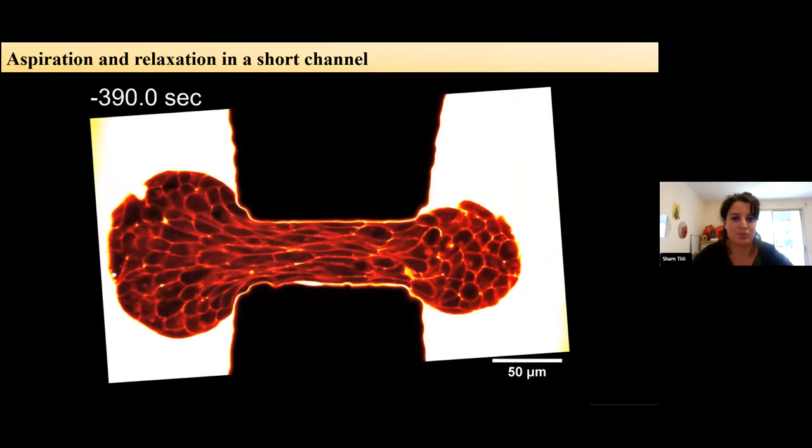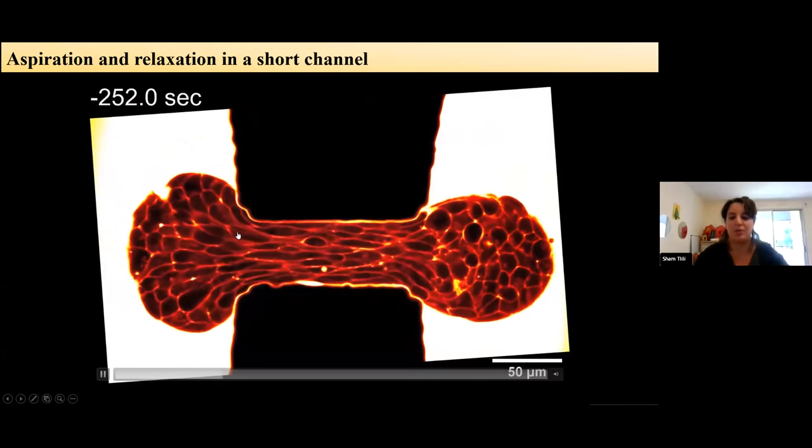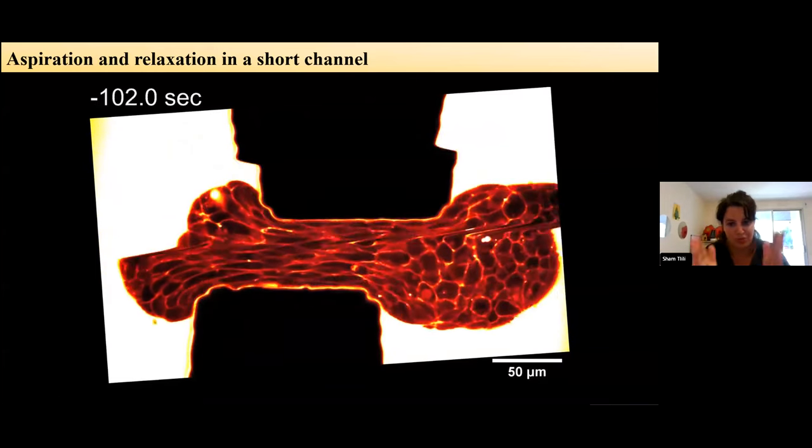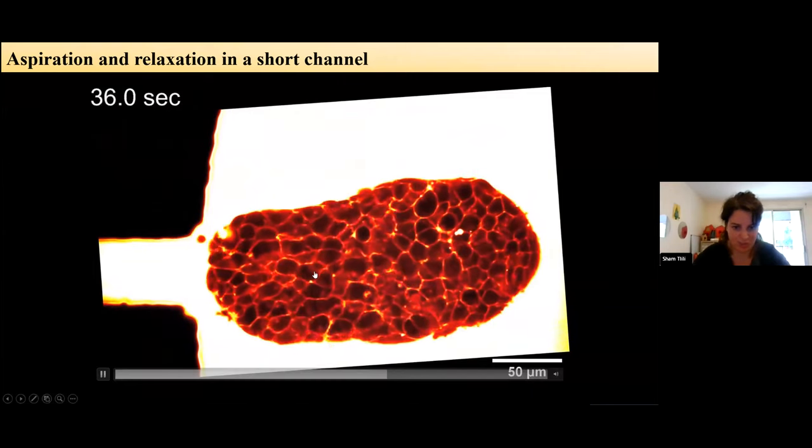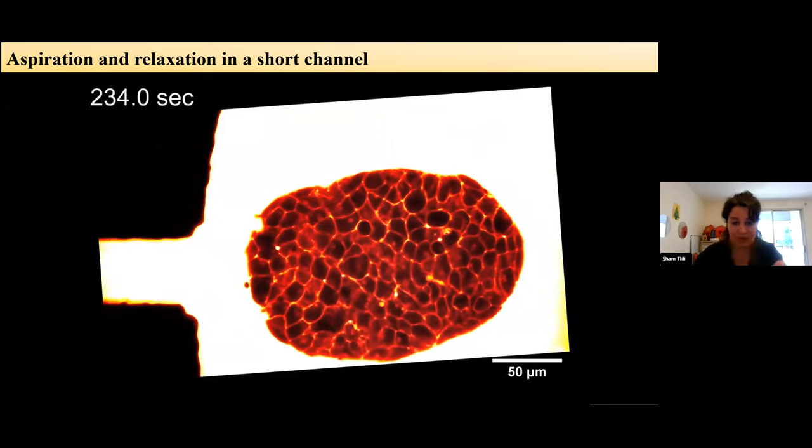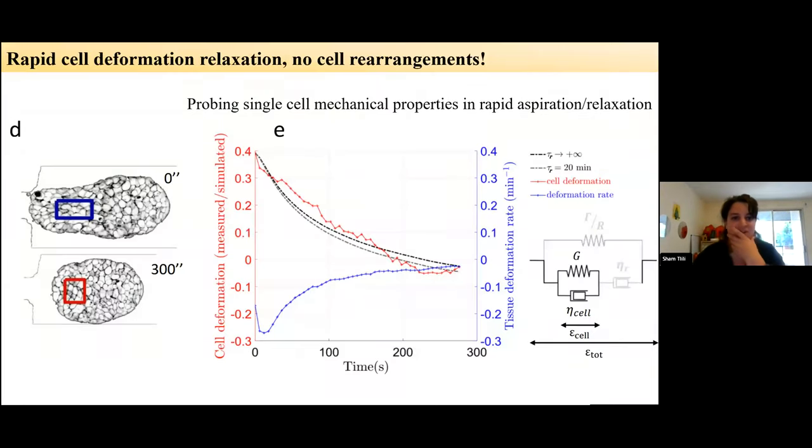So now what happens if we do another geometry and then instead of just flowing, the aggregate flows and relax on a small channel. Then you can see that the cells quickly relax their shape and the aggregate also. And if you do the same quantitative analysis, you can find that the cells did not rearrange at all. So here, if the channel is made small, not long, small enough, then the cells will flow but will not have the time to rearrange. And so you can just probe the single cell viscoelastic properties. So here, the timescale of the cell shape relaxation is really probing of more the nuclei and cell cortex rheologies.